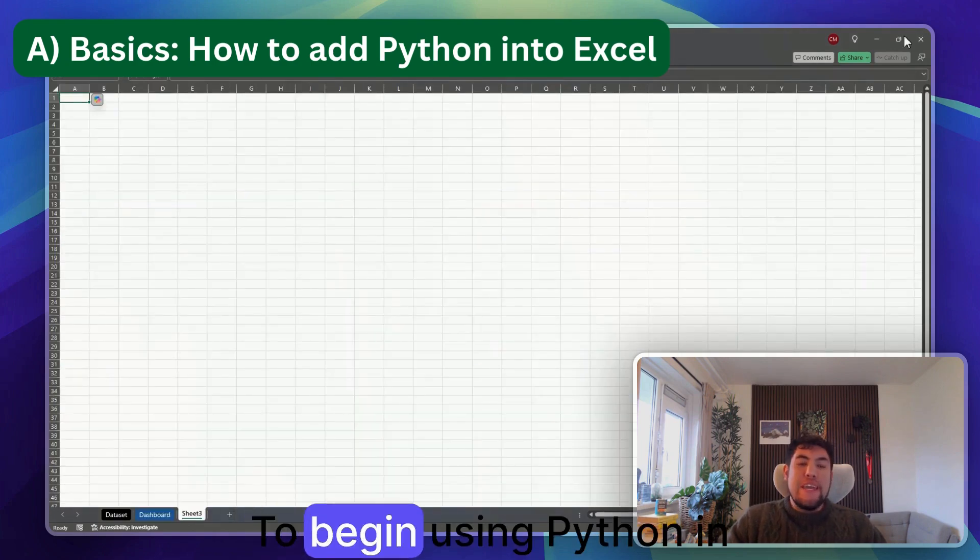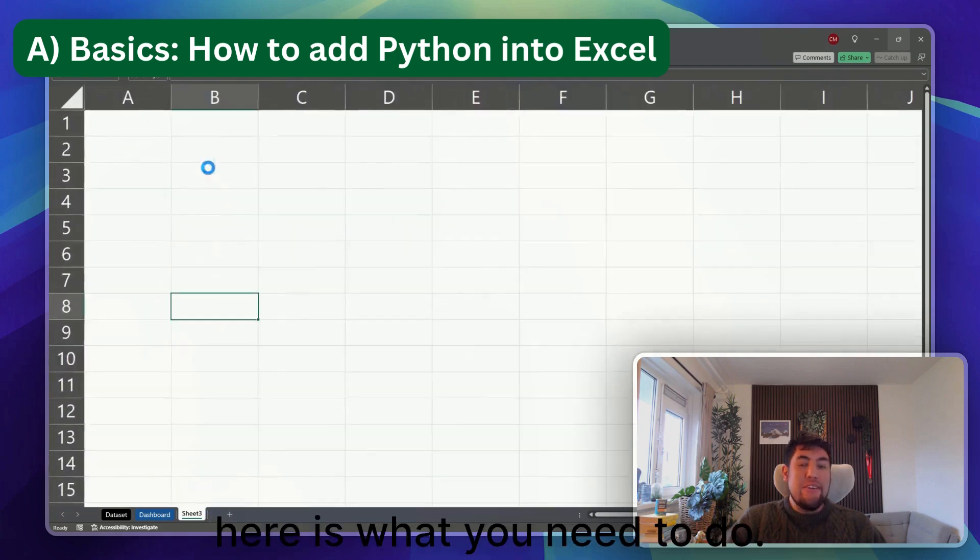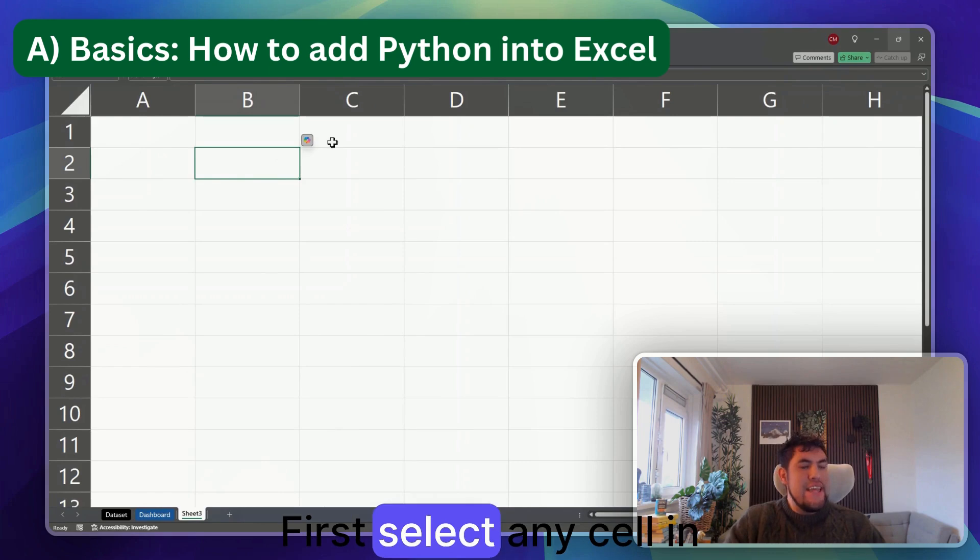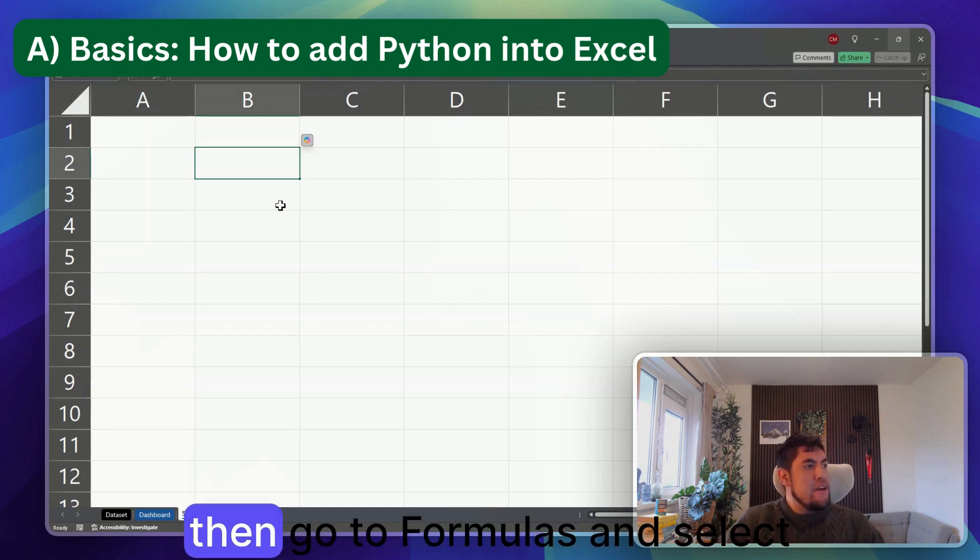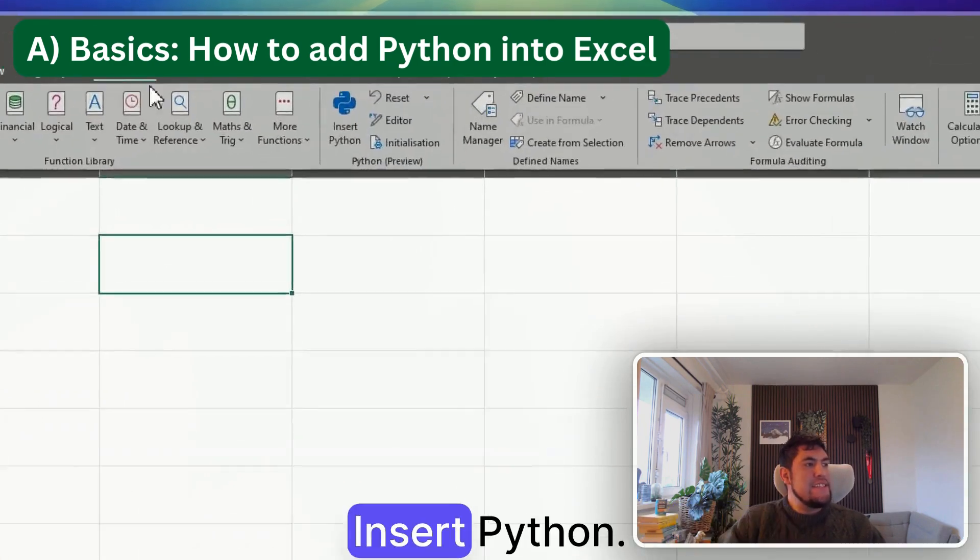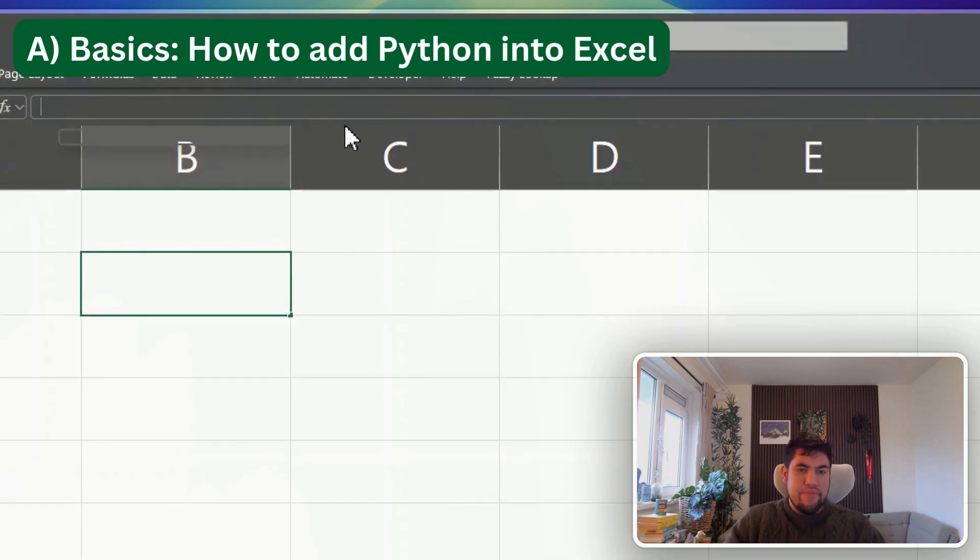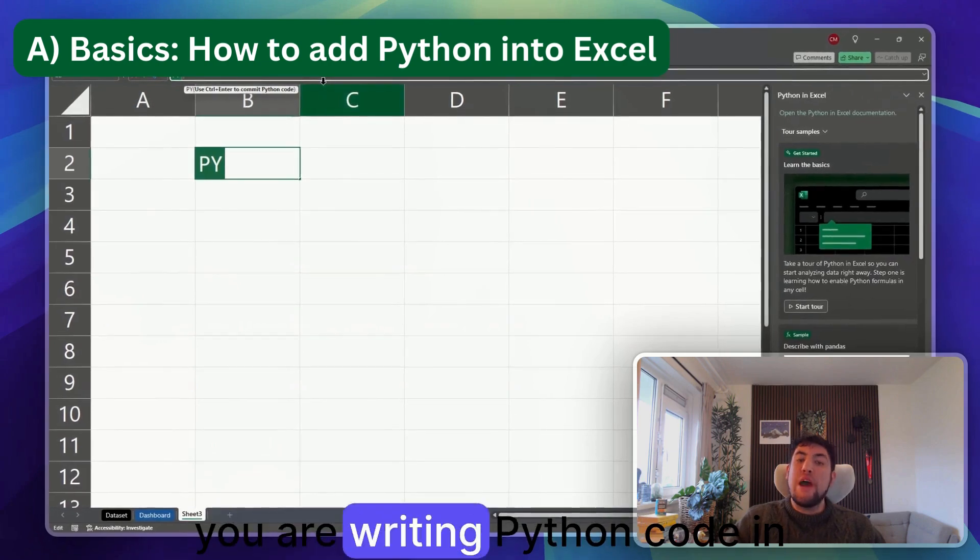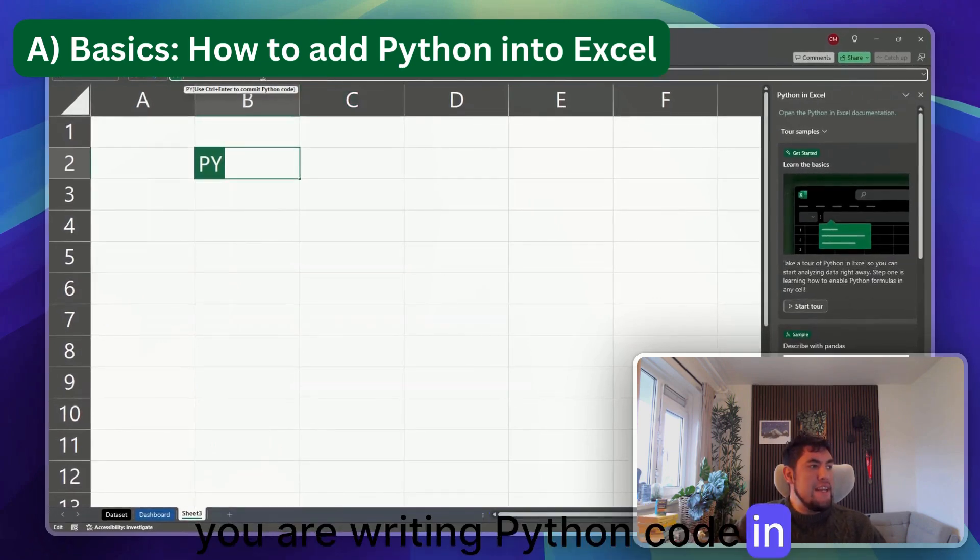To begin using Python in Excel, here is what you need to do. First, select any cell in Excel, then go to Formulas and select Insert Python.